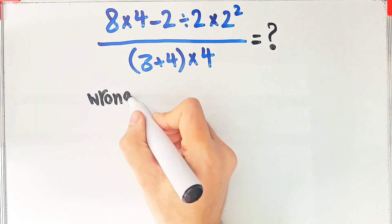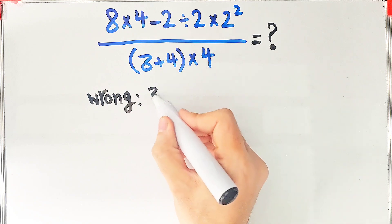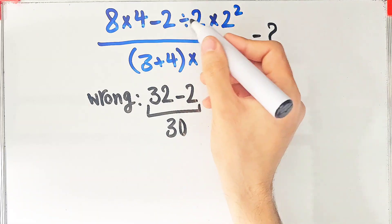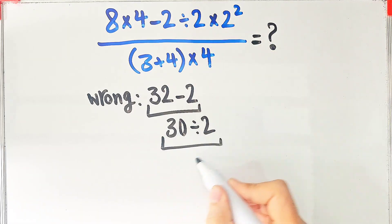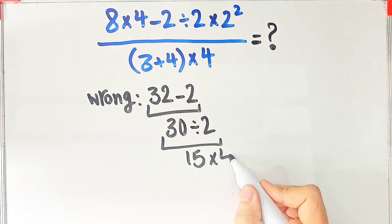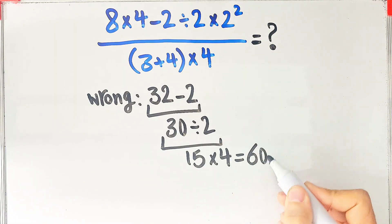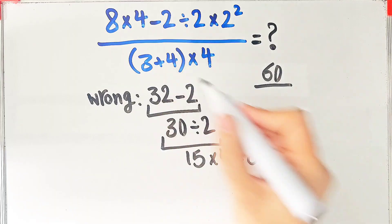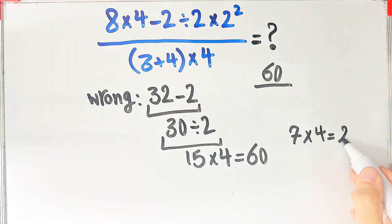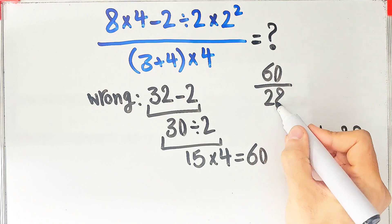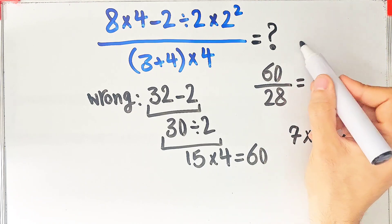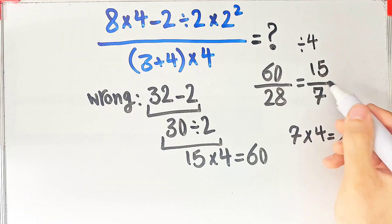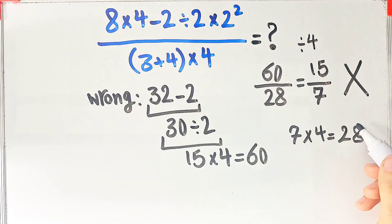In the wrong way of solving this question, some people solve it like this: eight times four equals thirty-two; thirty-two minus two equals thirty; thirty divided by two equals fifteen; and fifteen times two to the power of two, which equals four, gives sixty in the numerator. In the denominator, three plus four equals seven, and seven times four equals twenty-eight. They then divide both by four and say the final answer equals fifteen over seven — but this answer is definitely wrong.